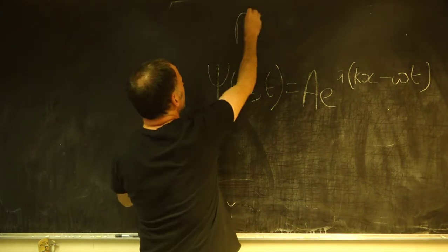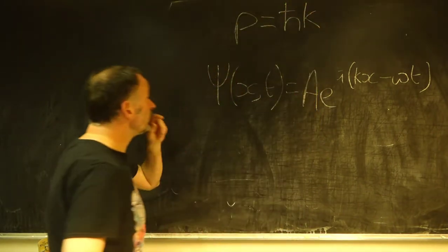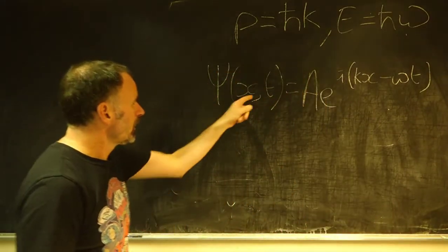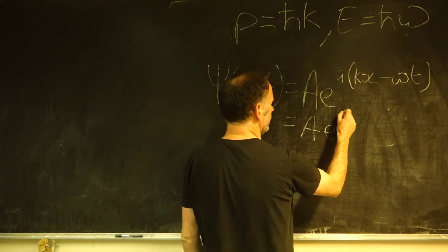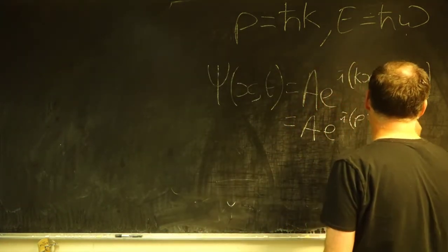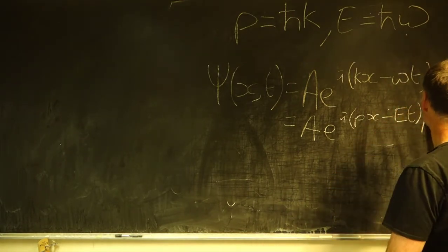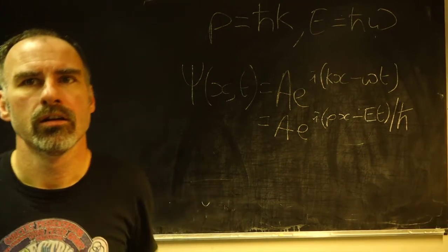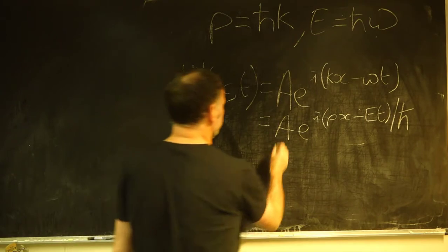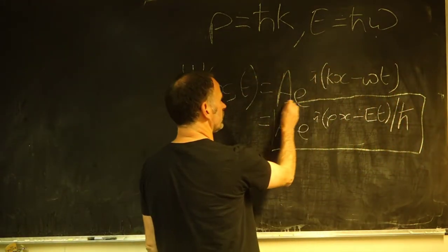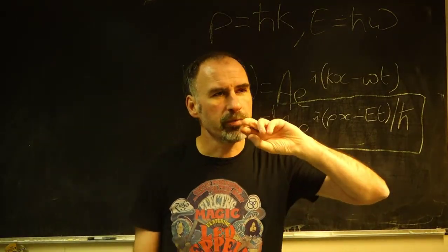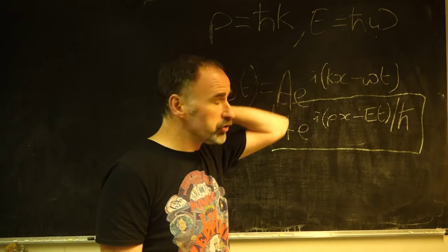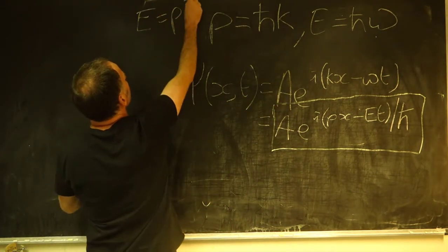We know from de Broglie that this equation is true, and this famous equation is true as well. That means we can rewrite this as... Okay, can you see all that? So look at this. So what Schrödinger wanted to do was to apply some type of mathematical operation or operations that would allow him to extract from this the classical value of energy, which as you'll remember, is E = p²/2m.